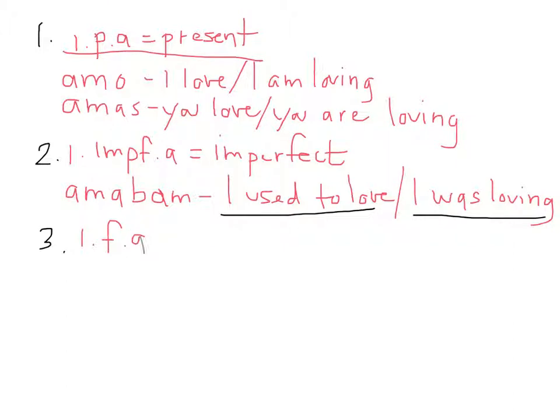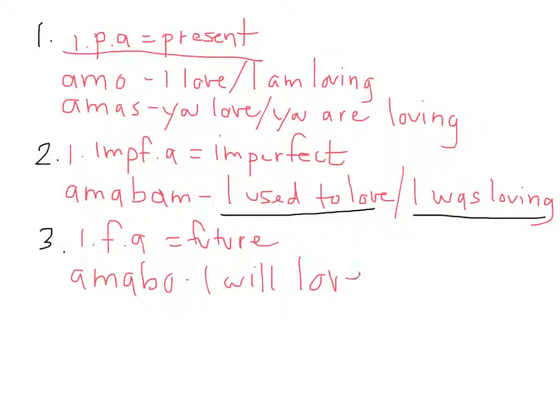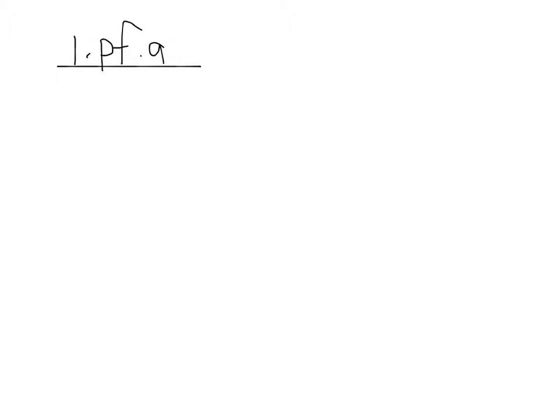The indicative future active, or future tense, is translated as 'I will love.' The indicative perfect active — what your textbook probably calls simply the perfect — translates in two ways: amavi would be 'I have loved,' and when that sounds awkward you can just say 'I loved.' That distinguishes it from the imperfect, which is 'I used to love' or 'I was loving.' The indicative pluperfect is translated as 'I had loved' — there's no other option for that one: 'you had loved,' 'he/she had loved.'